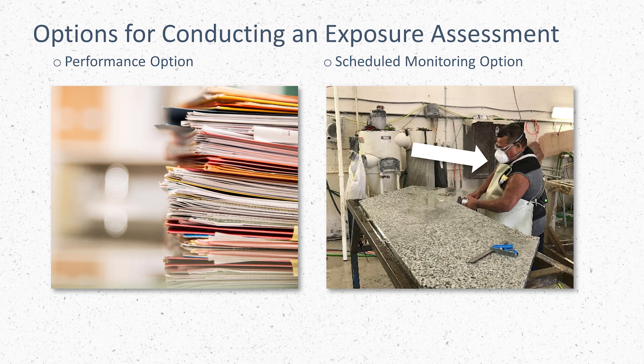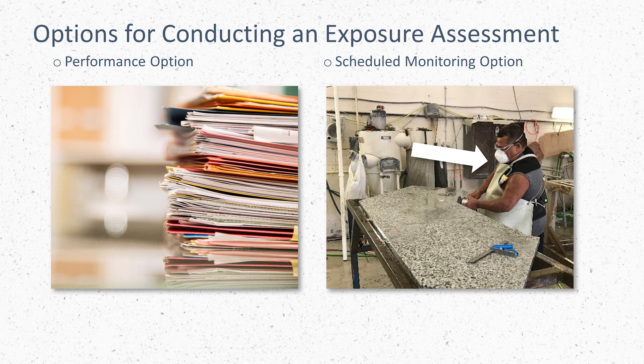The first step towards gaining compliance with the silica standard is to conduct exposure monitoring. There are two options for determining exposure. One is called the performance option, where you look at a combination of air monitoring data collected and make a judgment about exposure. Or you can perform scheduled monitoring or representative sampling, where you conduct air sampling for employees at the facility to see their exposures. This is the best method for cut stone companies because each company processes a wide variety of stone types, has very different buildings and ventilation, and uses different tools. For these reasons, using someone else's data may not actually represent the levels of silica at your facility.